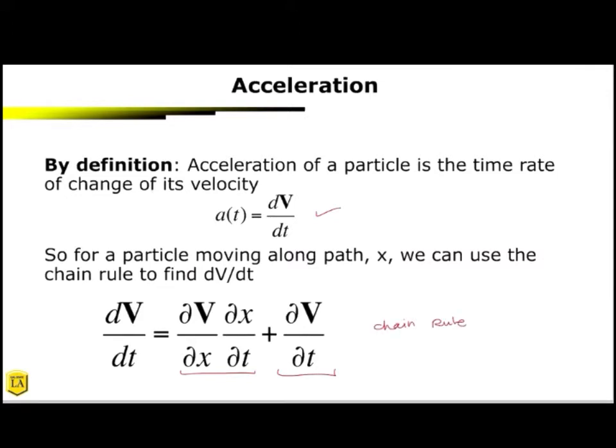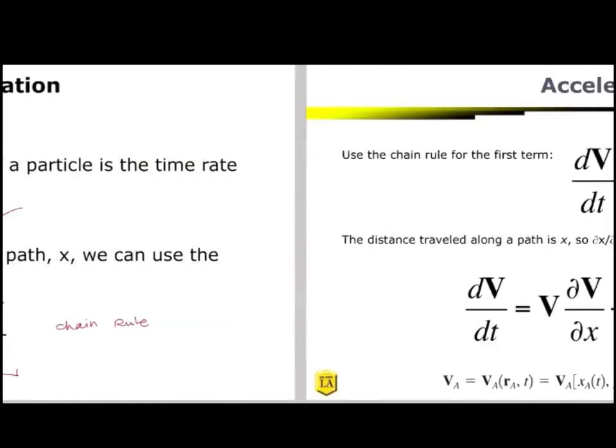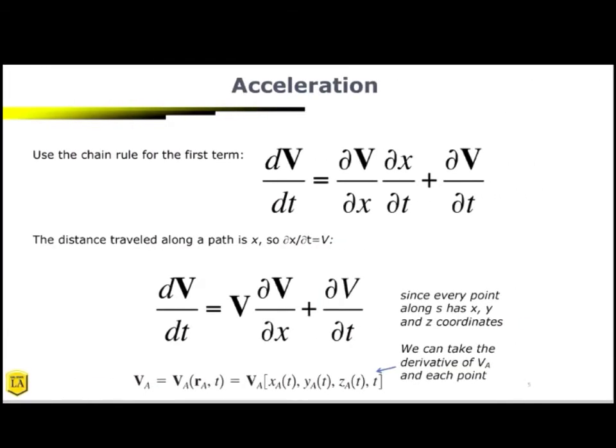Now, if you haven't yet, I would highly suggest you review your calculus three, your partial differentials. So we use the chain rule for the first term, and what we're going to do is we're just going to focus on X. So this is just going to be the 1D perspective. And we're traveling a distance along a path X, so dx/dt is equal to V.